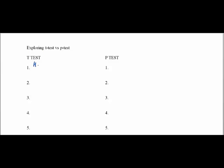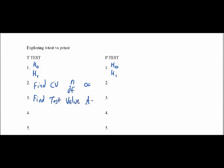Just like t-tests have a null and an alternative hypothesis, so do the p-tests — that isn't any different. In the previous video, we would find the critical value by looking at the sample size, figuring out degrees of freedom, and asking whether it was a one-tail or two-tail test. This is also based on the alpha we were given. In step three we would find the test value using the t-value formula.